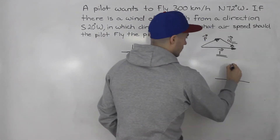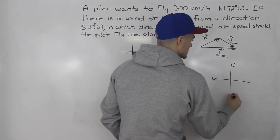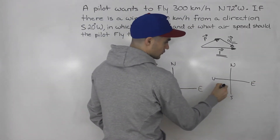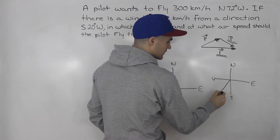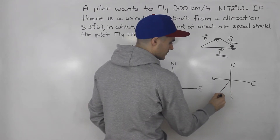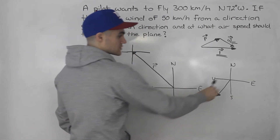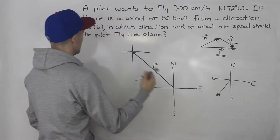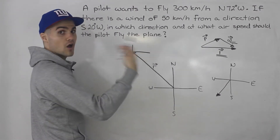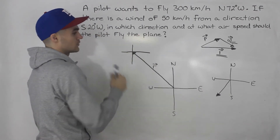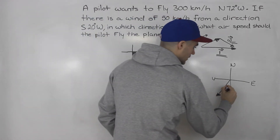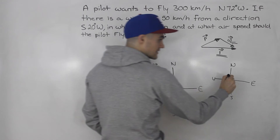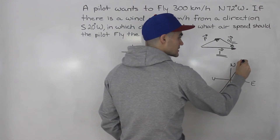Drawing that on the side — north, west, south, east — south 20 degrees west is this way. That's going towards south 20 degrees west, but notice that we're told it's coming from that direction. So this is 20 degrees. If it's coming from that direction, that means it's going in the opposite direction.